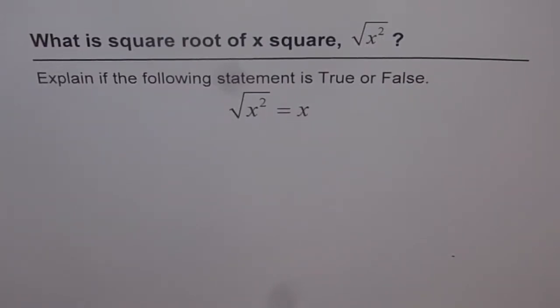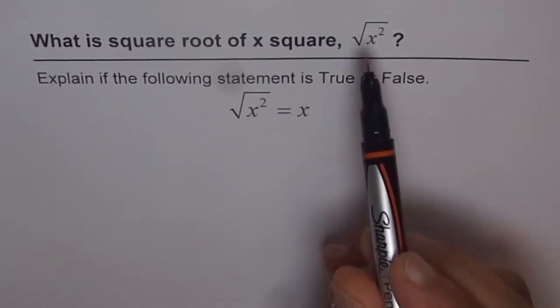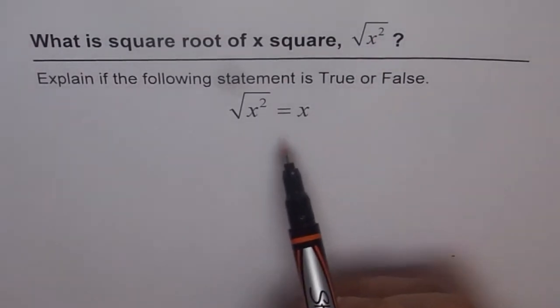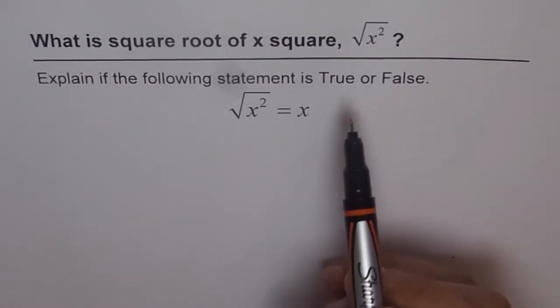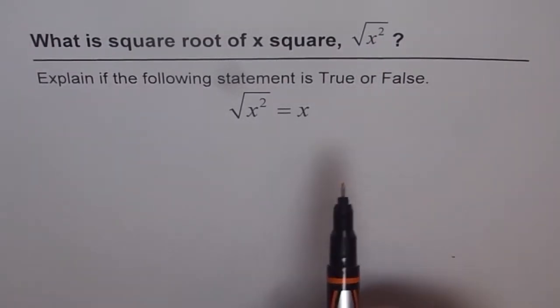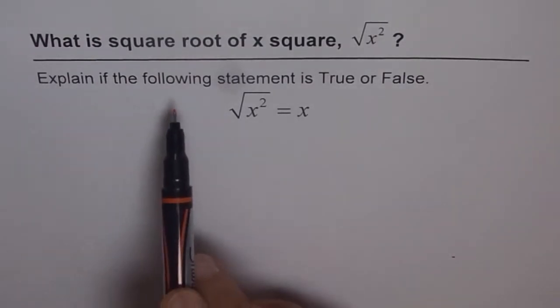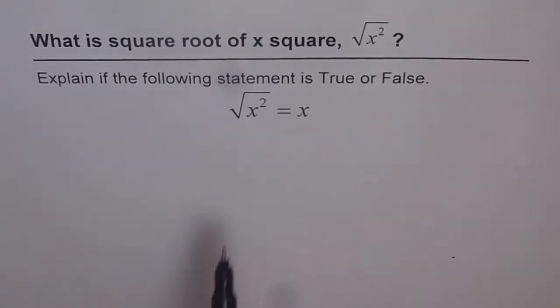What is square root of x square? That is, square root of x square. What is that? Let me ask you this question in some other way. That is, explain if the following statement is true or false. Square root of x square equals to x. Is it true or false?